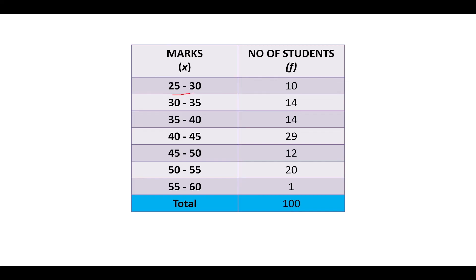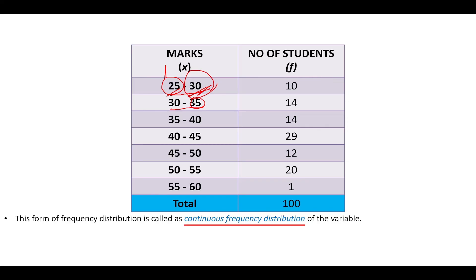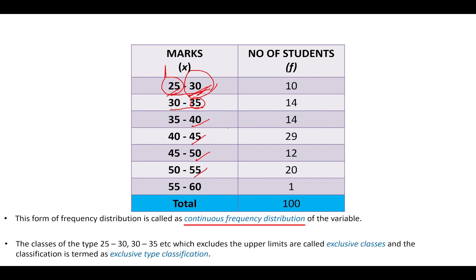Here we will use the class interval from 25 to 30. This means the class interval will include students who have obtained marks from 25 up to 30, but excluding 30. Similarly, the class interval from 30 to 35 will include students who have got marks from 30 to 35, but excluding 35. This type of frequency distribution is called continuous frequency distribution of the variable. Since we are excluding the upper limits, these classes are called exclusive classes, and the classification is termed as exclusive type classification.